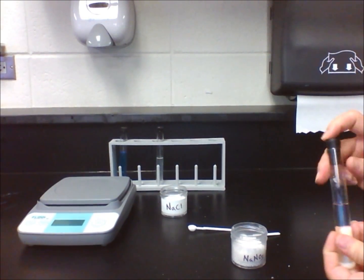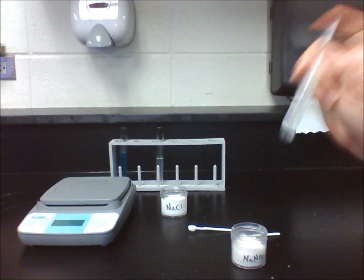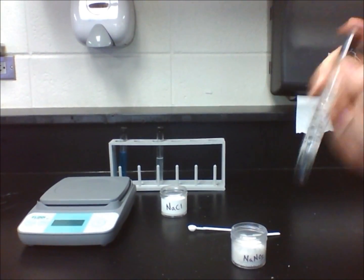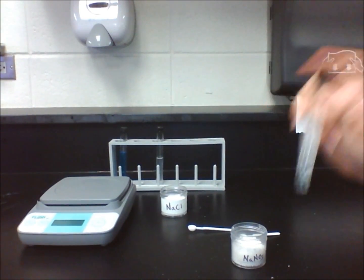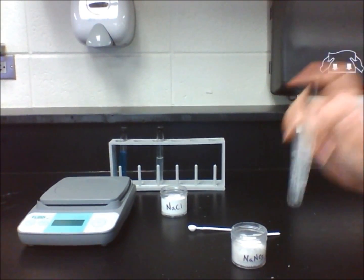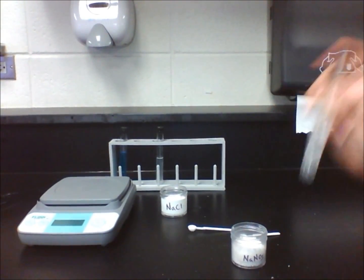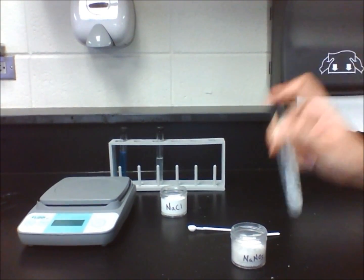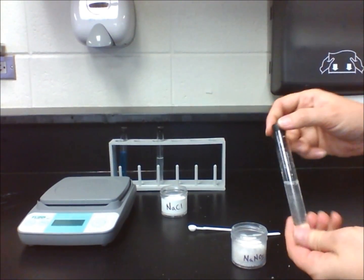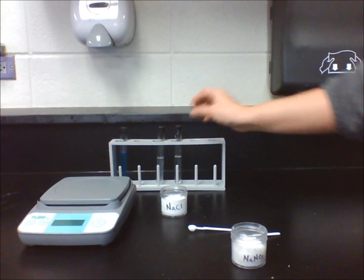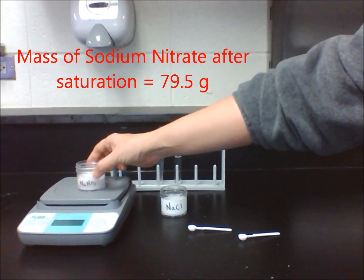Keep adding scoops one scoop at a time until no more can dissolve. After you have created a saturated solution, mass the jar of sodium nitrate on the scale and record the mass. Take the original mass minus the new mass to get the mass dissolved. Calculate solubility for each substance by dividing the mass dissolved by 10 mL of water.